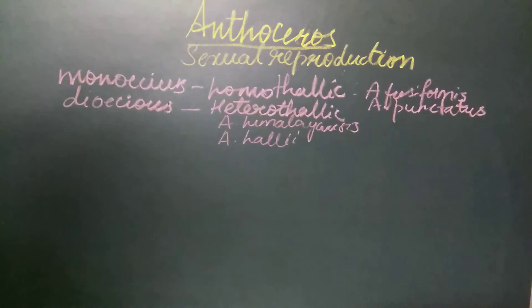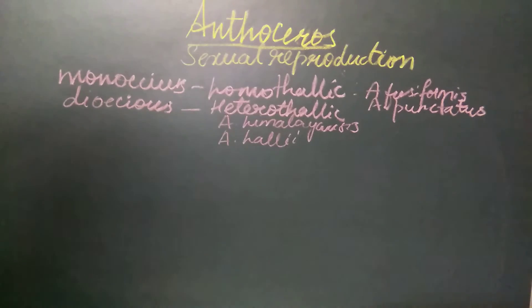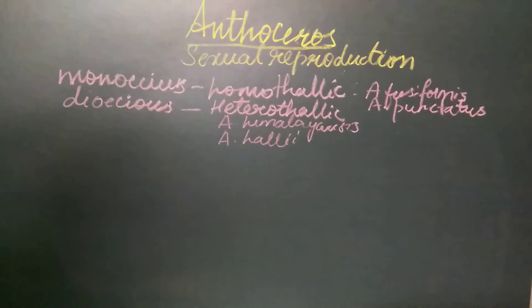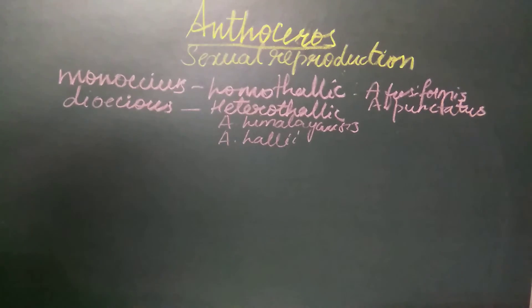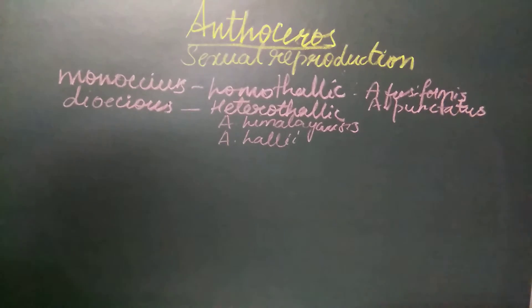If Anthoceros species are monoecious, we see a condition called the protandrous condition, where the antheridium matures first. If the antheridium matures first, there is inhibition and the antheridium is not in a position to fertilize the egg formed on the same thallus. That is why homothalic species are protandrous in nature.